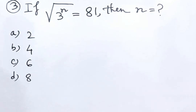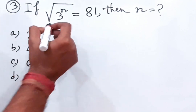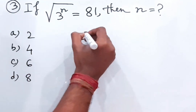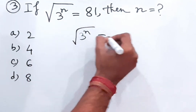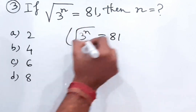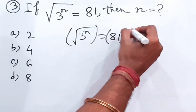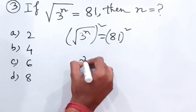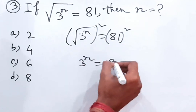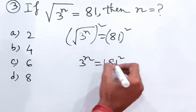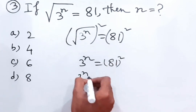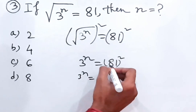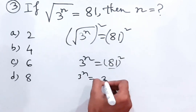Now, if √3^n = 81, then n = ? So we have 3^(n/2) = 81. We'll square both sides, so 3^n = 81². We can write 81 as 3 to the power 4, so 81² = (3^4)².